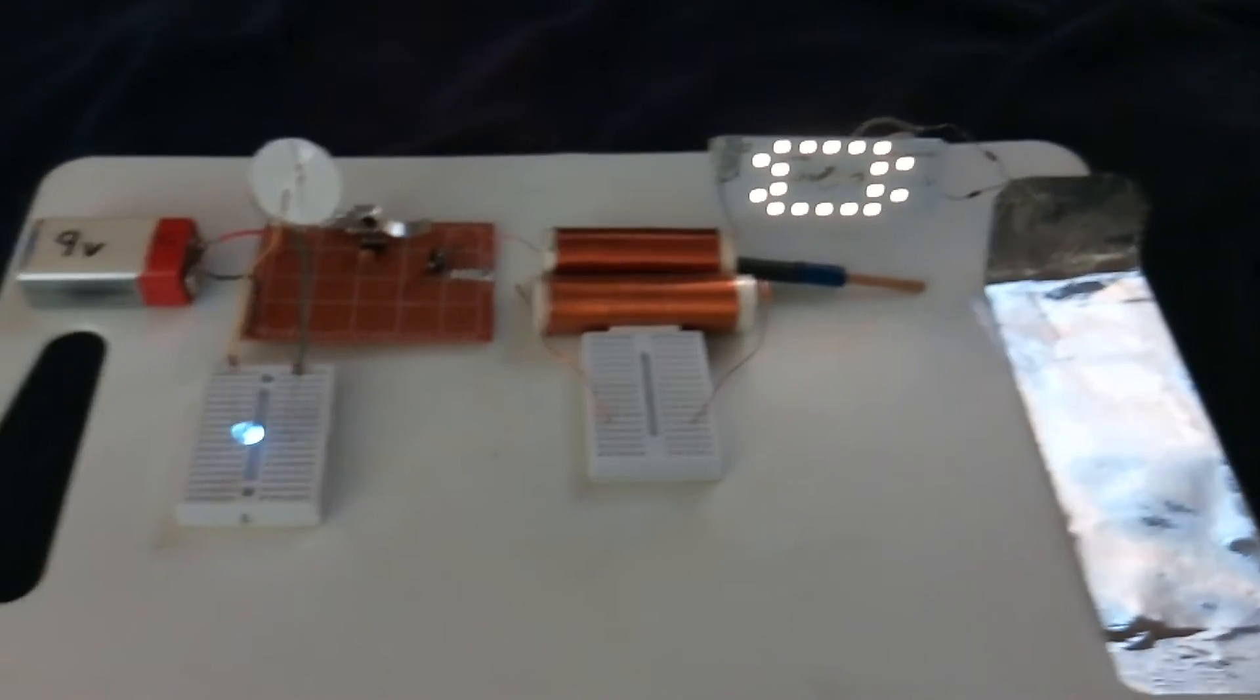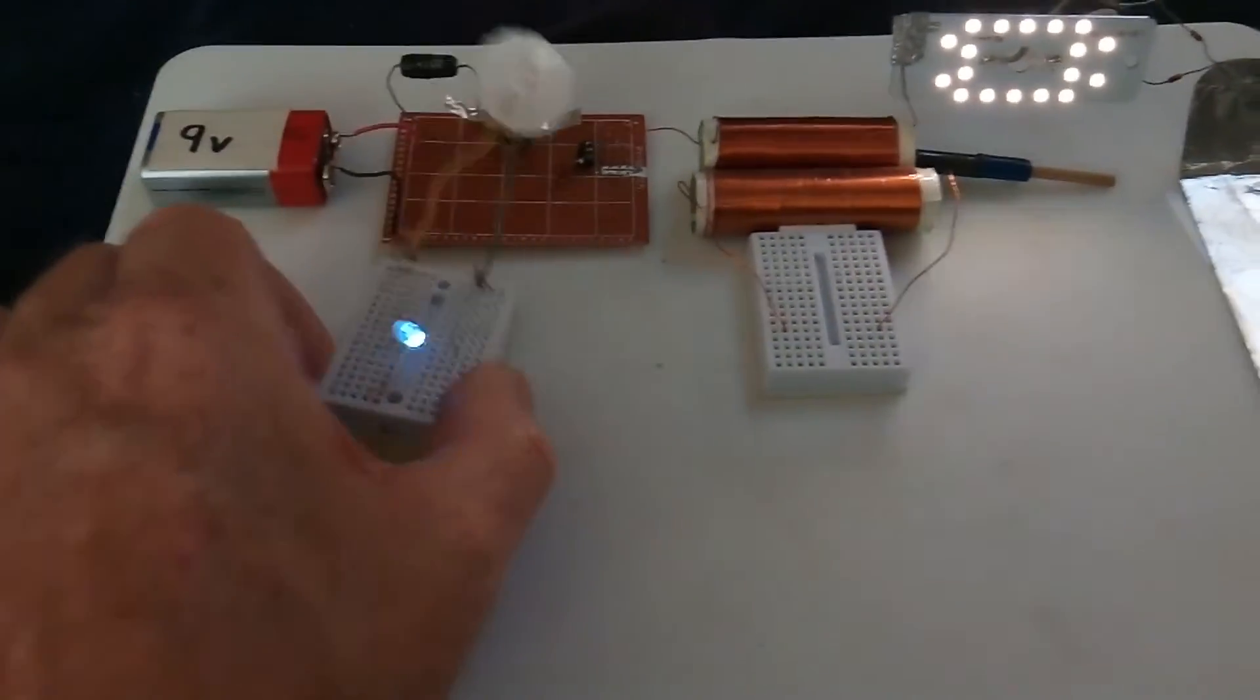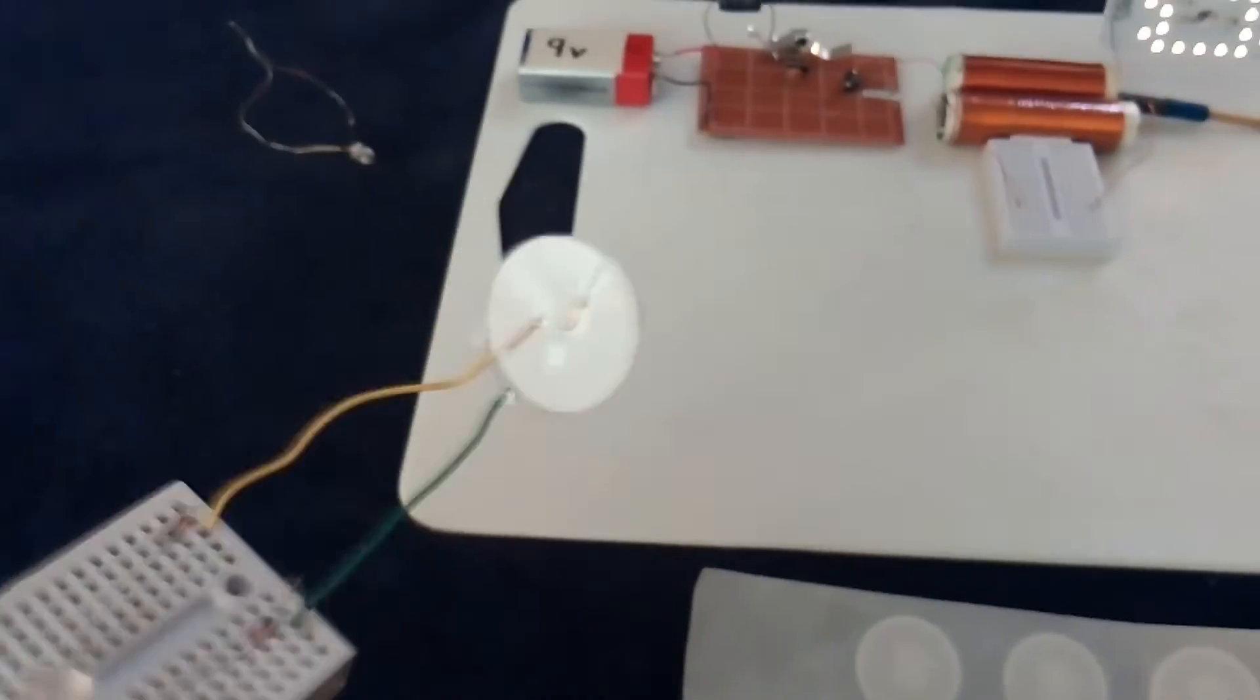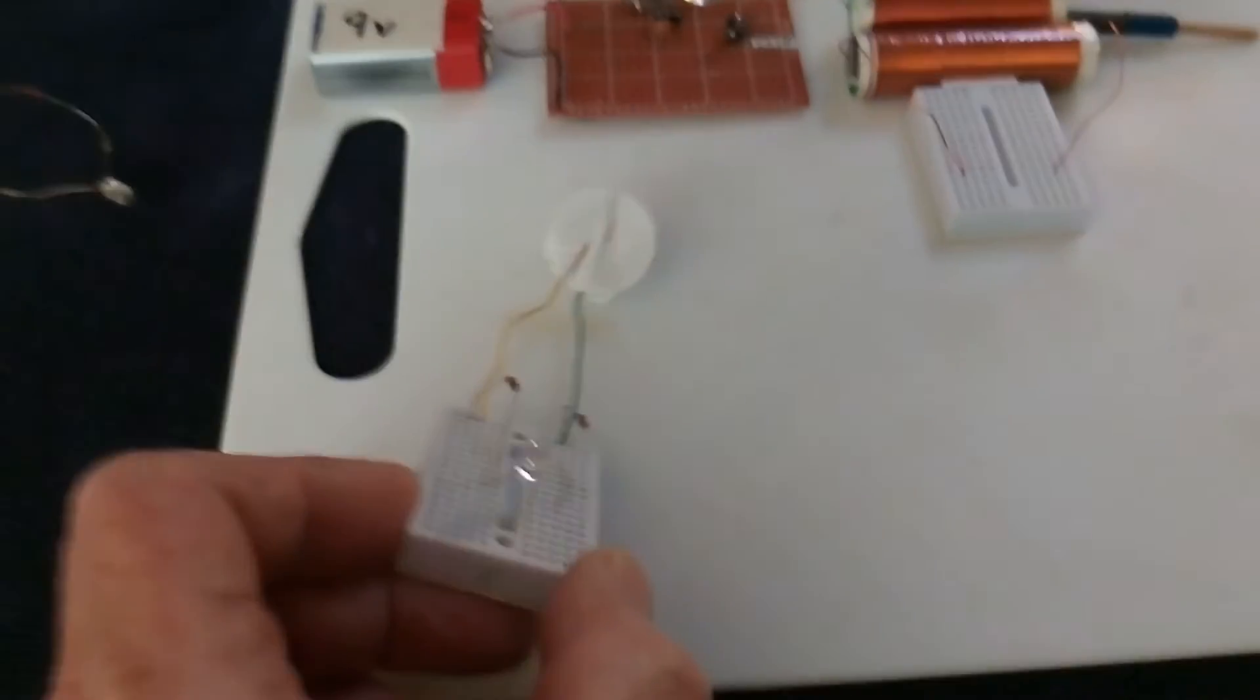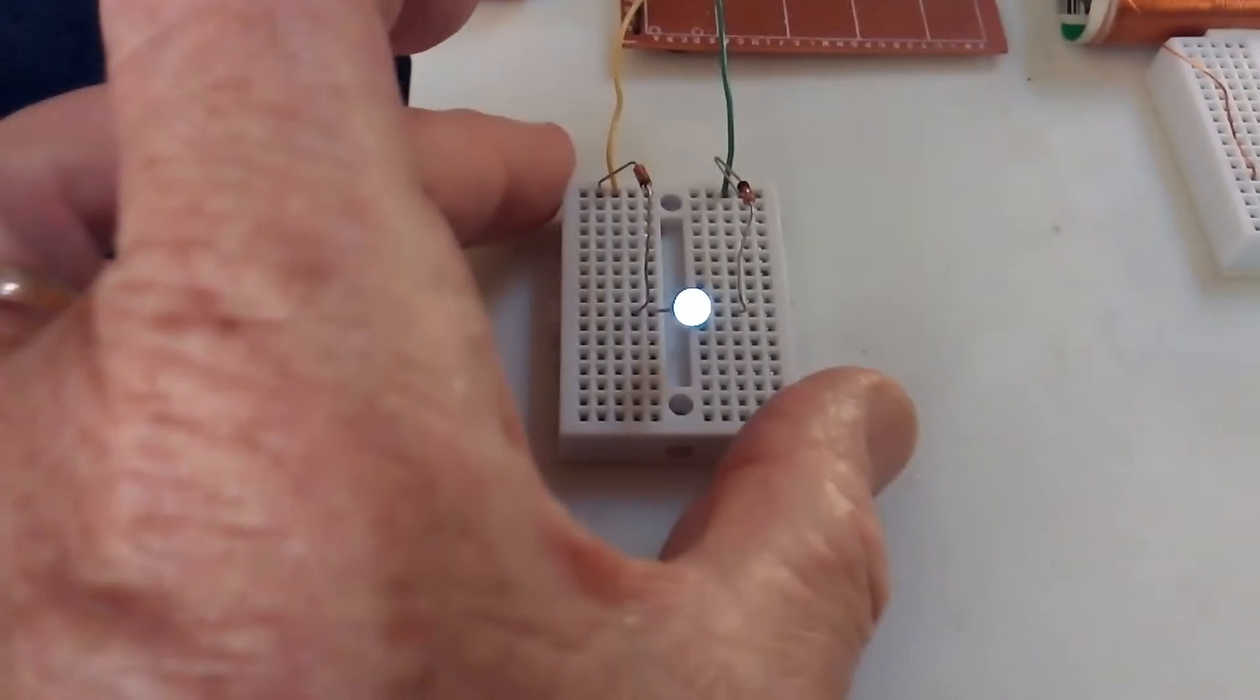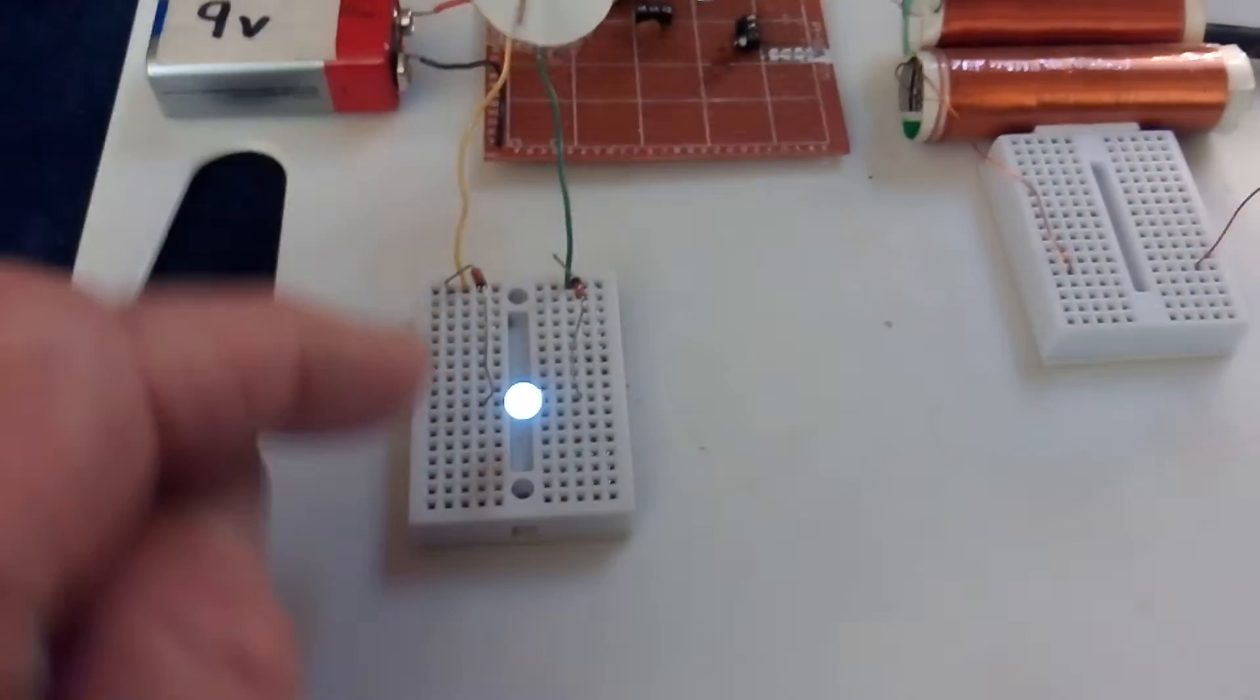And this little RFID radio frequency identification tag is acting as a receiver for the energy coming off of this oscillator. See that lighting up there? There's a very specific way this thing works.